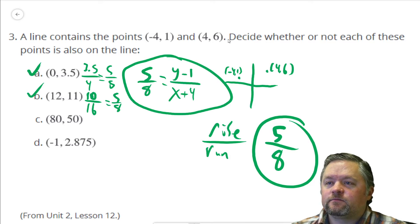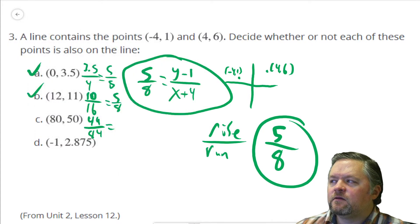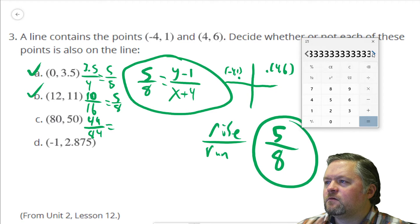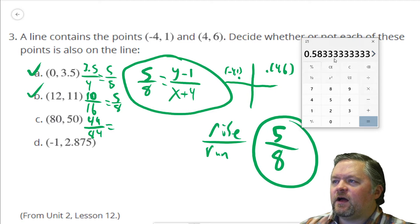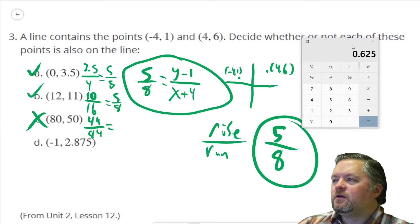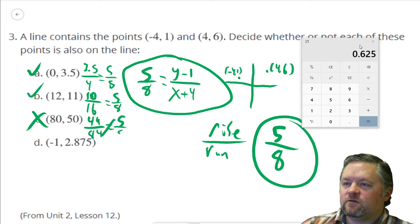80, 50. Plug it in. y minus 1 is 49 over x plus 4 is 84. 49 over 84. That one might be a little trickier to do in your head. Let me bring back my good friend the calculator. 49 divided by 84 is 0.583. 5 divided by 8. Well that's not even close to the same thing. So we want it to be 0.625 because that's 5/8. So that's not equal to 5/8.